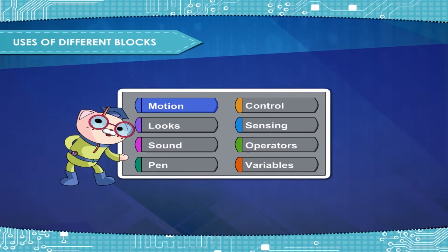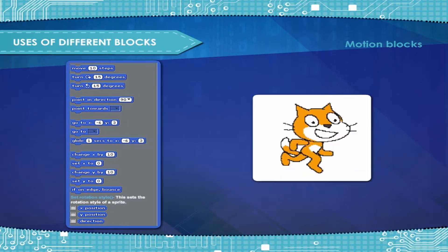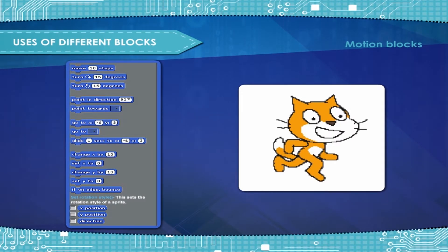Uses of different blocks: Motion blocks. Motion blocks are the blocks that control a sprite's movement. There are different motion blocks in Scratch. Scratch has many motion stack blocks.